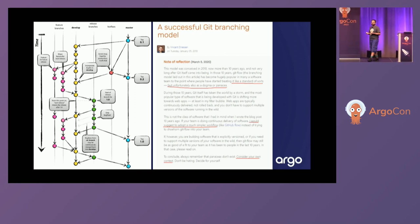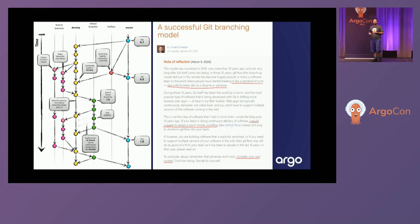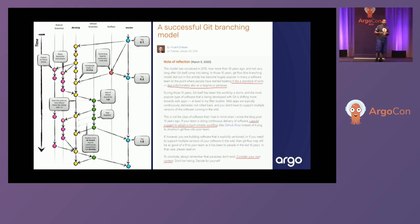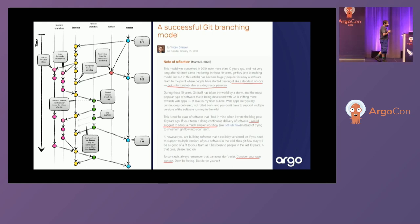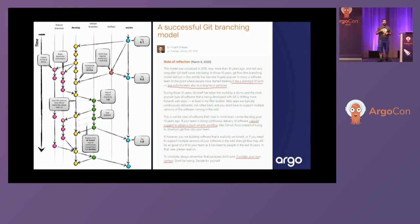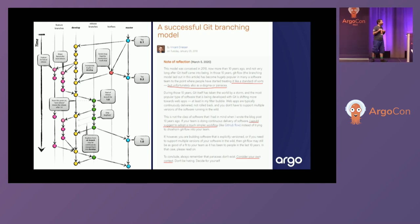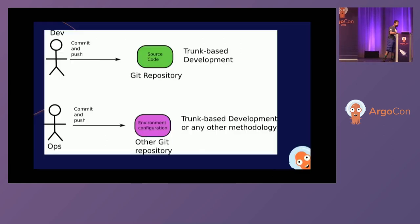When I ask people why they chose this pattern, the answer I expect is 'we evaluated everything and this was best.' But almost always the answer is 'we were using git flow and did the same thing.' That's wrong. If you go to the git flow page today, there is a huge warning message from the creator of git flow saying you should not use it. Don't believe me — believe the creator.